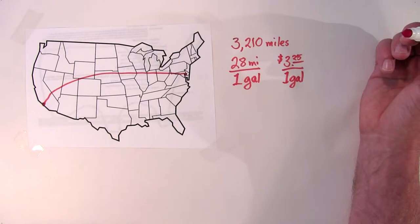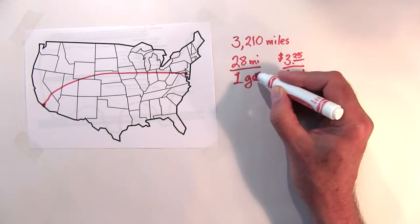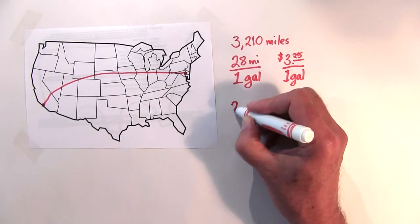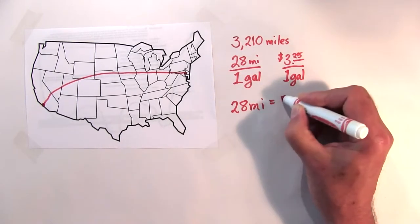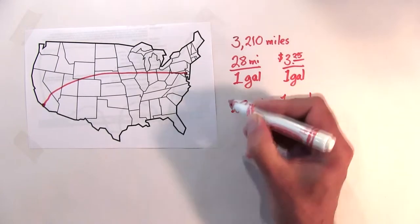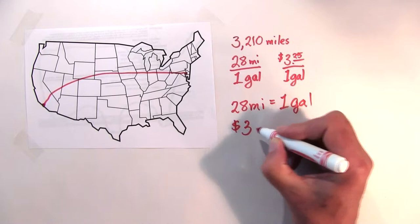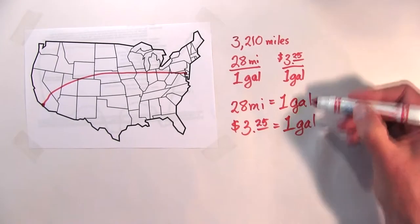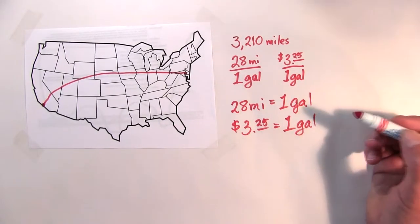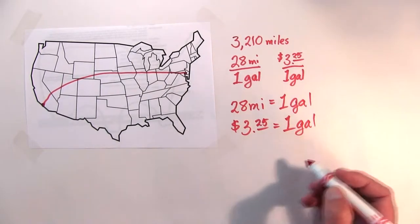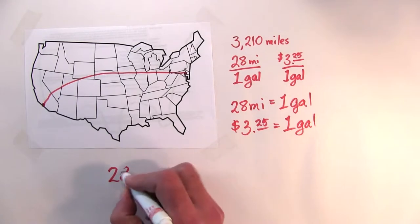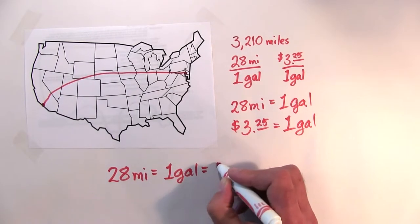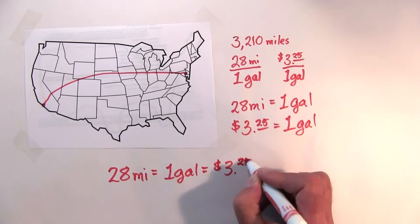Well, we gotta calculate out how much money it's going to take to travel 3,210 miles. Now there's a really simple, easy way to do this. These are not fractions, these are factors. They're ratios related to each other. So I can take this and say that 28 miles equals one gallon of gas, and I can also take this and say that $3.25 equals one gallon of gas.